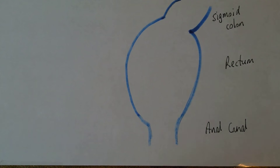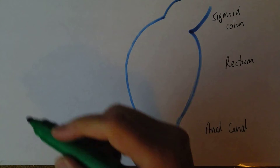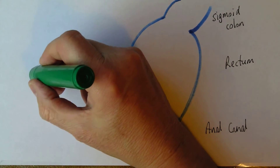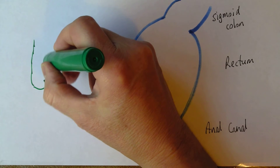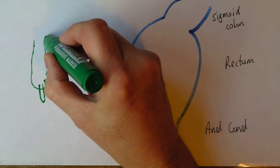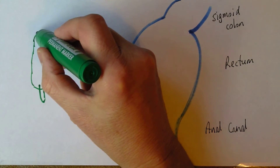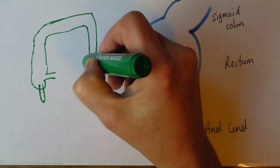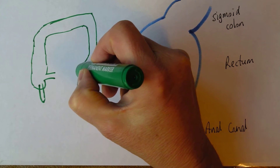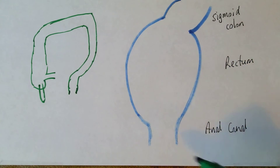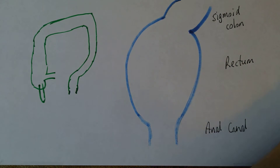Just so we've got some context: if we think about the ilium bringing in material to the cecum with the ascending colon, the appendix is a blind-ended pouch from the cecum, then the transverse colon, the descending colon, sigmoid colon, and then the rectum and anus. So we're looking at a blow-up of the bottom part here - the rectum and the anus.